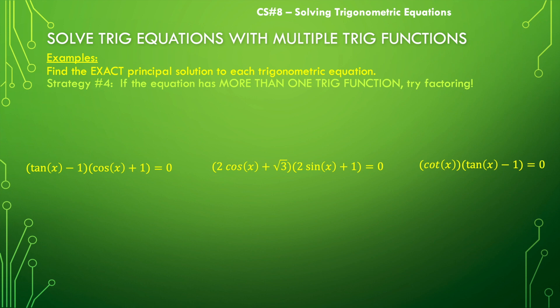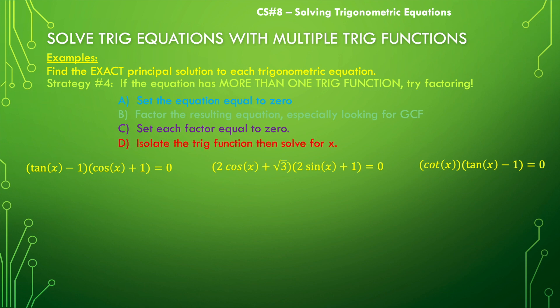In this strategy, we will notice that our equations have more than one trig function embedded in them and we are going to separate those into separate factors. First, set the equation equal to zero, then factor the resulting equation — especially looking for a GCF, which will usually be a trig function. Then set each factor equal to zero and isolate the trig function to solve for x.